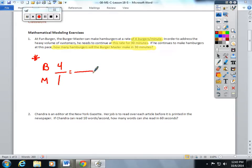This question is asking us, how many hamburgers will the Burger Master make in 30 minutes? So I find minutes, I put 30. One times 30 is 30, and whenever I do to the bottom of a fraction or a ratio, I must do to the top. The Burger Master can make 120 burgers in 30 minutes.